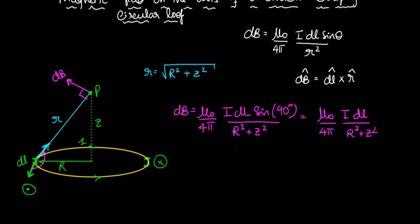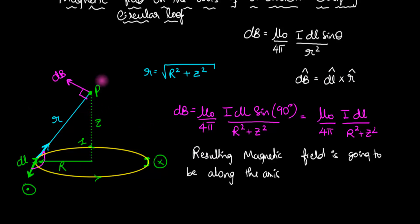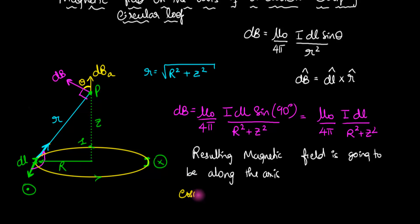It's for that reason, all that matters to us is the component that is along the axis. So let's write down that component — this is the axial component dbA. If I call this angle theta, then using the right-angle triangle, this is the adjacent side and this is the hypotenuse. Taking cos(theta) gives the adjacent side divided by the hypotenuse. That makes dbA equal to db times cos(theta).